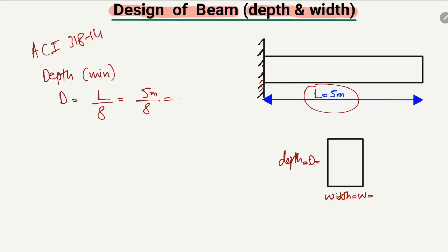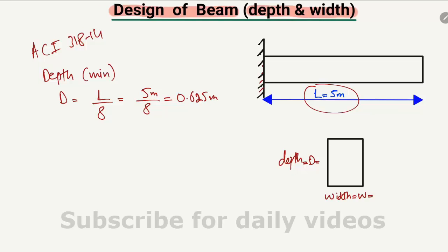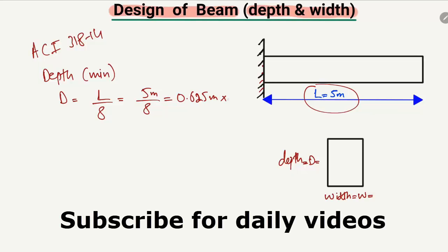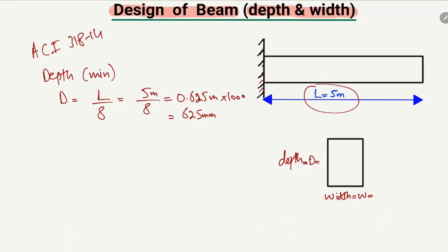We get 0.625 meters, and if we multiply this by 1000 we get the value in millimeters: 625 millimeters. So 625 mm should be the minimum depth for this beam when the length of the beam is 5 meters. This is the code requirement.